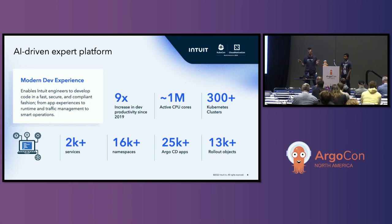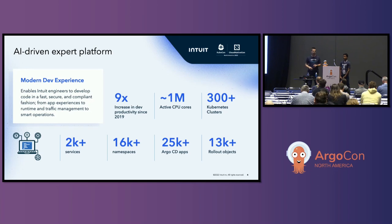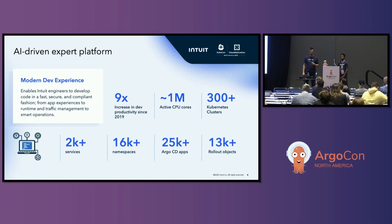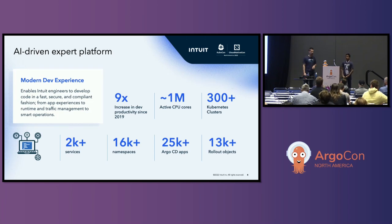We run pretty much everything we talked about here today at scale at Intuit. Our environment is up to about 320 clusters now, so pretty much everything runs on Kubernetes in the public cloud. More relevant to the talk today, we have about 16,000 namespaces spread across 300 clusters, roughly 25,000 applications running in Argo CD, and about 13,000 or so rollout objects in there.